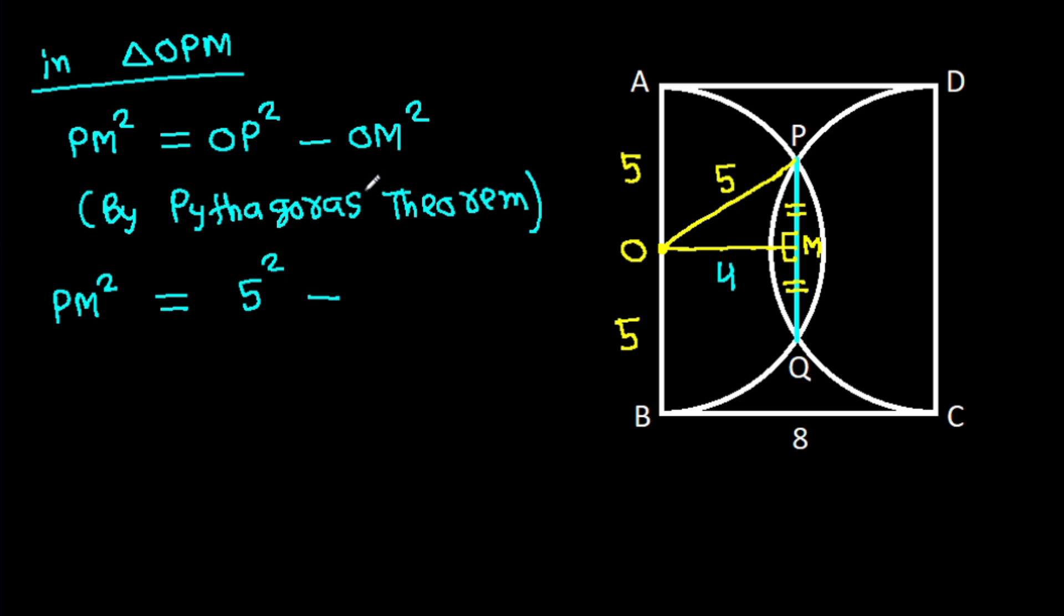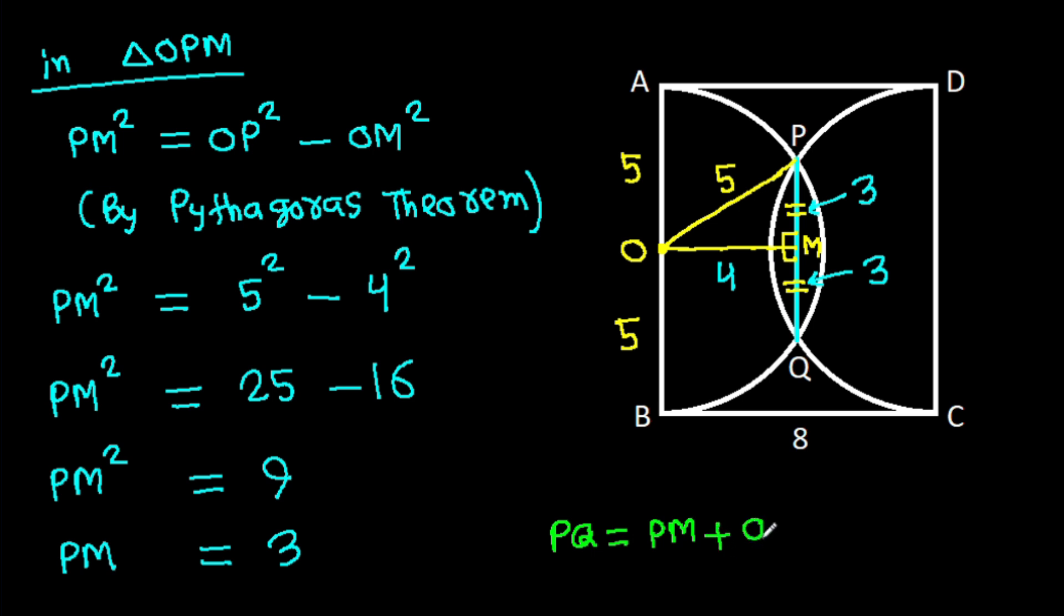PM square is 25 minus 16, which equals 9, so PM is 3. That means QM will also be 3, and PQ is 6.